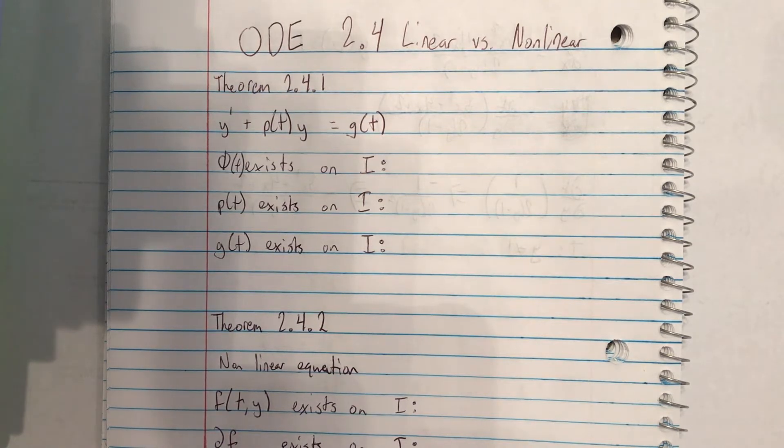So in this chapter, we actually have two theorems. They're labeled 2.4.1 and 2.4.2.